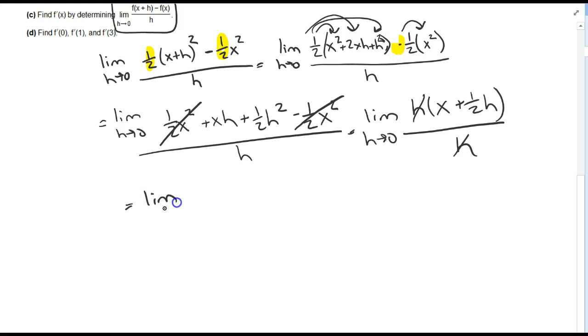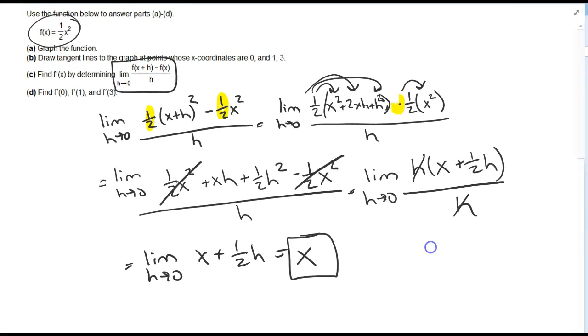So I get the limit as h goes to 0 of x plus 1 half h. If h goes to 0, my answer here is just x. So the derivative of 1 half x squared is just x.